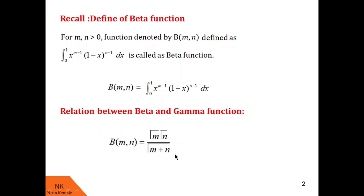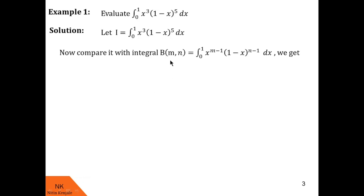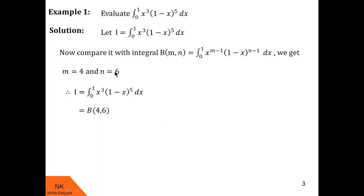Now let us see examples that can be solved using the definition of beta function. In this first example, we are asked to evaluate the integral of x cubed into 1 minus x raised to 5, dx over the limit 0 to 1. We label this integral as i, then compare it with the definition of beta of m, n. We see this integral is a perfect match where m minus 1 is 3 and n minus 1 is 5, giving us m equal to 4 and n equal to 6. Therefore, i equals beta of 4, 6.